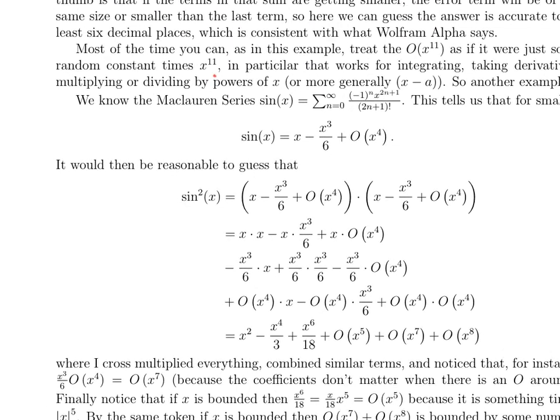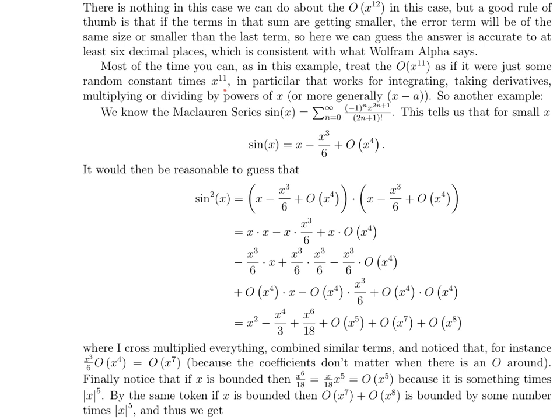So here's another example. Sine of x, we know, is equal to the Taylor series minus 1 to the n, x to the 2n plus 1 over 2n plus 1 factorial. So that tells you for small x, sine of x is x, that's the n equals 0 term, minus x cubed over 6, that's what happens when you plug in n equals 1, plus higher order terms, O of x to the 4th.